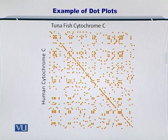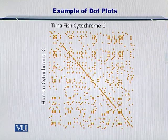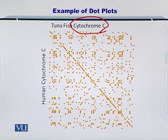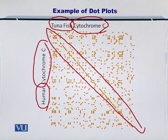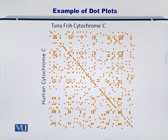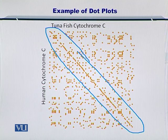Here I'm giving you a dot plot for cytochrome C from tuna fish and humans. As you can see, the cytochrome C molecule from these two species is very nicely aligned, which is shown by this very long diagonal that is visible on the plot.